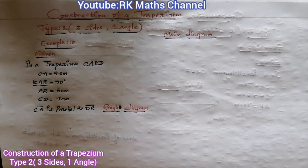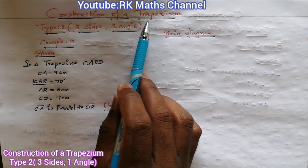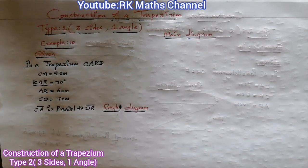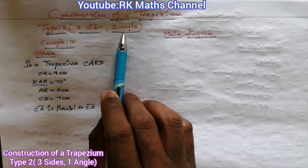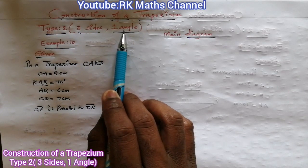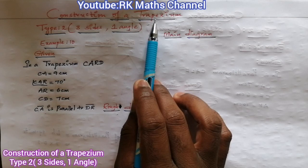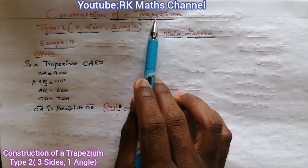Hi students, welcome to RKMS channel. Today's topic is the construction of a trapezium. A trapezium is a quadrilateral where one pair of opposite sides are parallel. A general quadrilateral requires 5 measurements to construct, but a trapezium requires only 4 measurements.